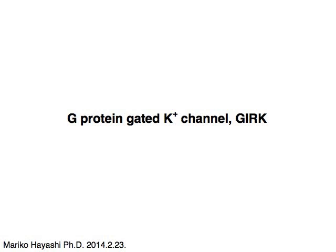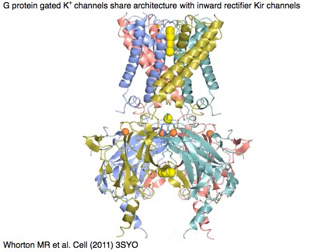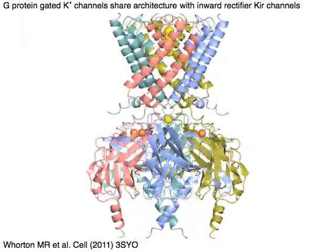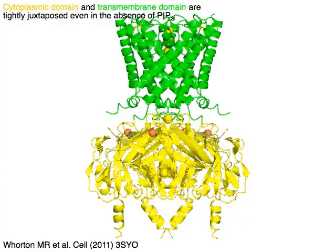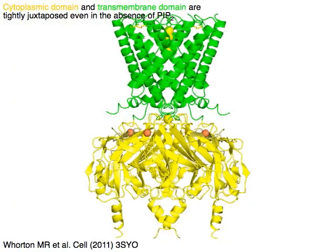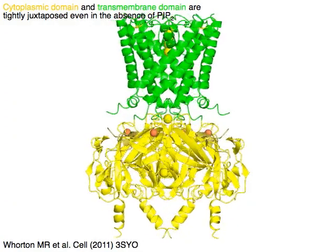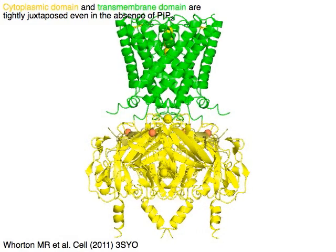G-protein-gated potassium channel, GIRK. G-protein-gated potassium channels share architecture with inward rectifier K channels. The cytoplasmic domain in yellow and transmembrane domain in green are tightly juxtaposed even in the absence of PIP2 for GIRK.